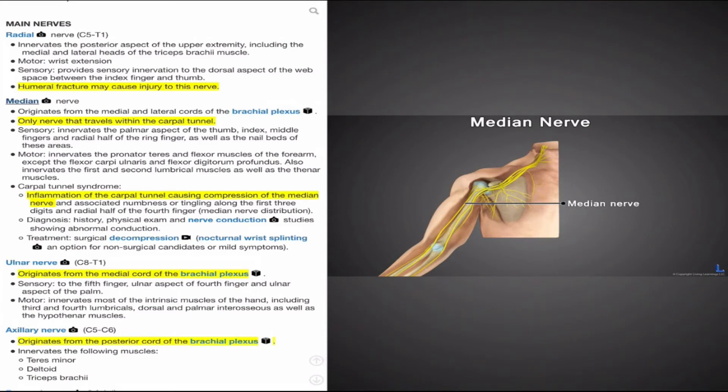A very common clinical finding associated with the median nerve is carpal tunnel syndrome, which results from inflammation of the carpal tunnel, causing compression of the median nerve. Patients with carpal tunnel syndrome will present with numbness and tingling along the first three digits and a radial half of the fourth digit, often occurring at night. Carpal tunnel syndrome is often diagnosed using patient history, physical exam, and nerve conduction studies. Conservative treatment for patients with milder symptoms involves wrist splinting and immobilization at night. Surgical candidates may undergo a surgical decompression of the carpal tunnel to relieve pressure off the median nerve.